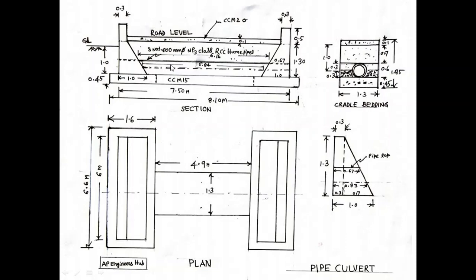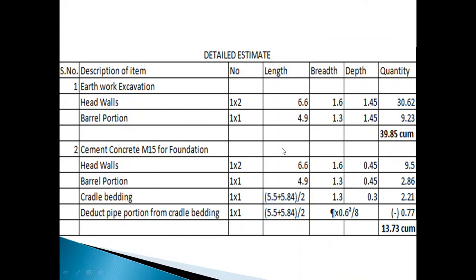This is the drawing of Pipe Culvert. This is section, this is plan. This is side view. Detailed Estimate of earthwork execution.